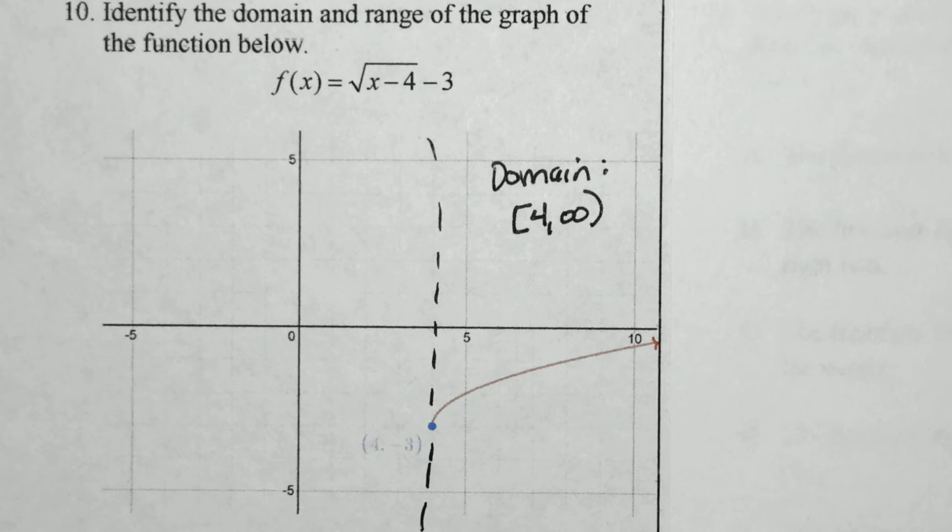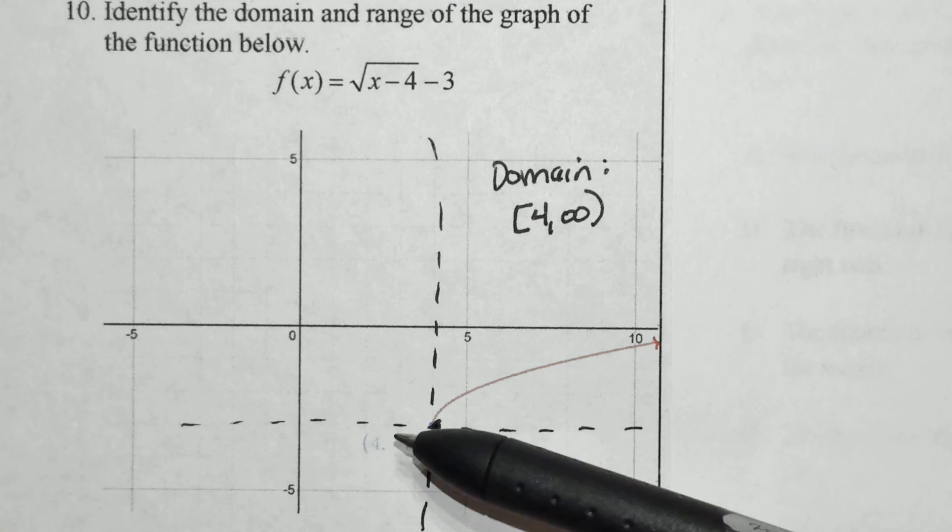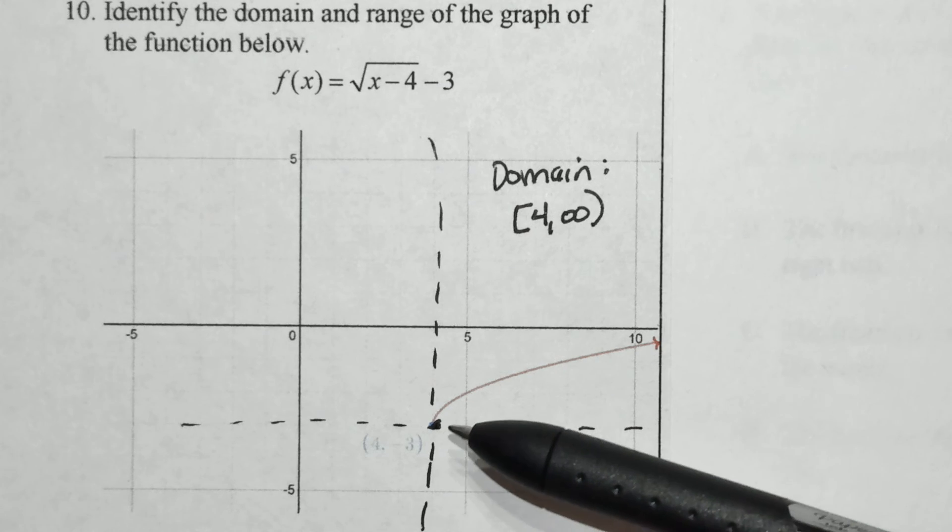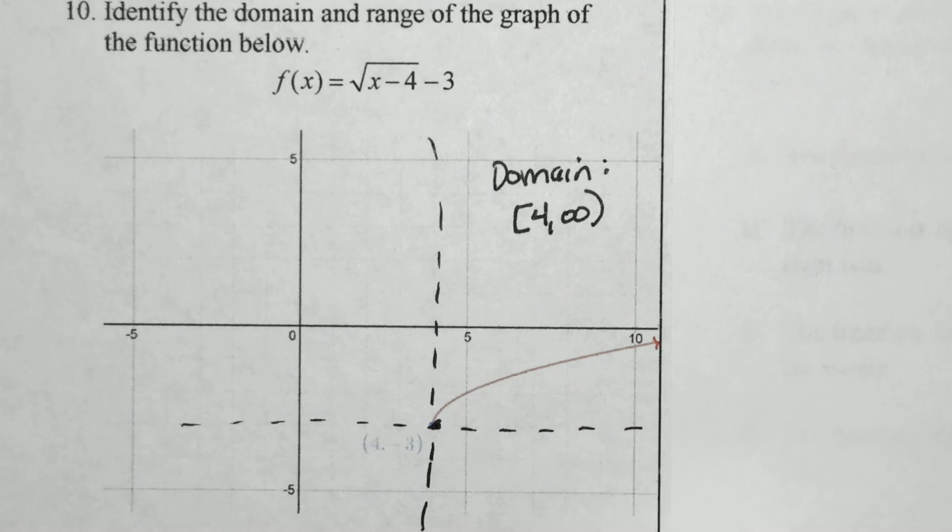The range, notice again we have negative 3 for the y. The lowest function goes as far down as negative 3 for y, and then it continues to move up as it goes to the right.